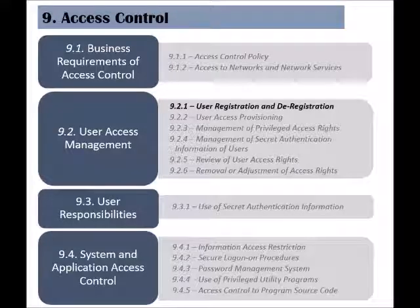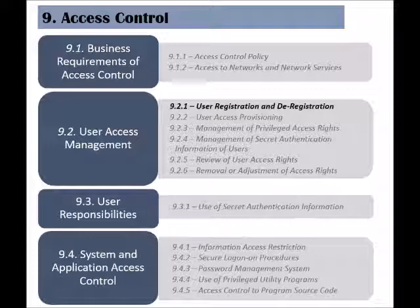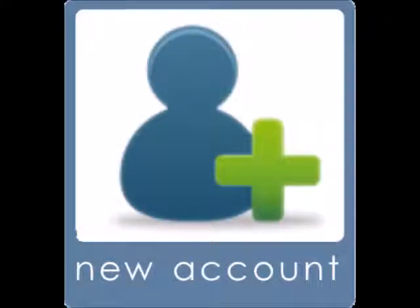The second category of access control is called user access management. As the name says, this category will be focused on user accounts and access rights. The first control of this category is called user registration and deregistration. Normally, when a new employee joins a company or an existing employee needs access privileges to a system or service, a new user account has to be registered with appropriate access rights.